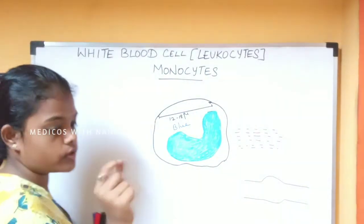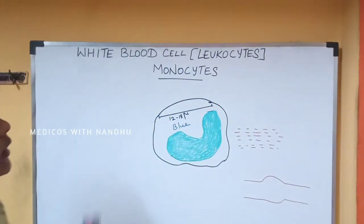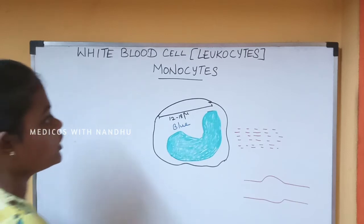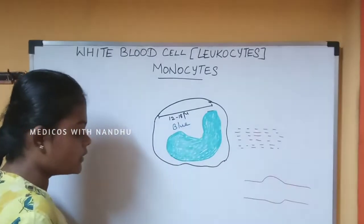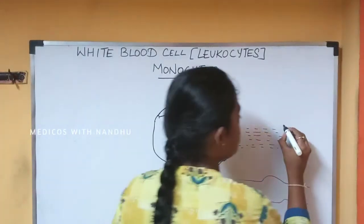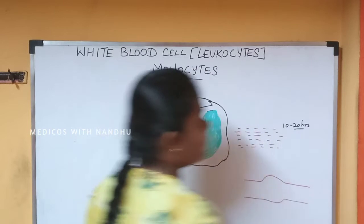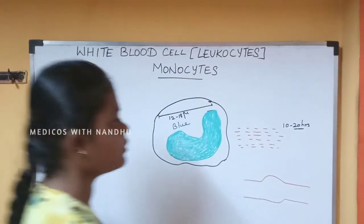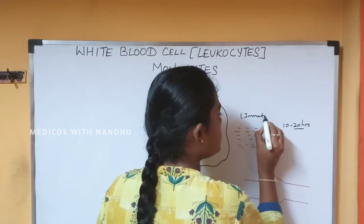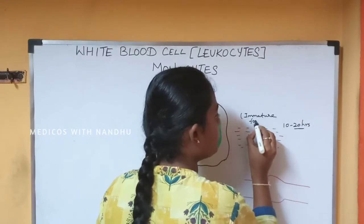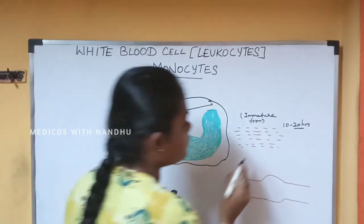The monocyte circulates in the blood for 10 to 20 hours. During this time in the blood, the monocyte is in its immature form.